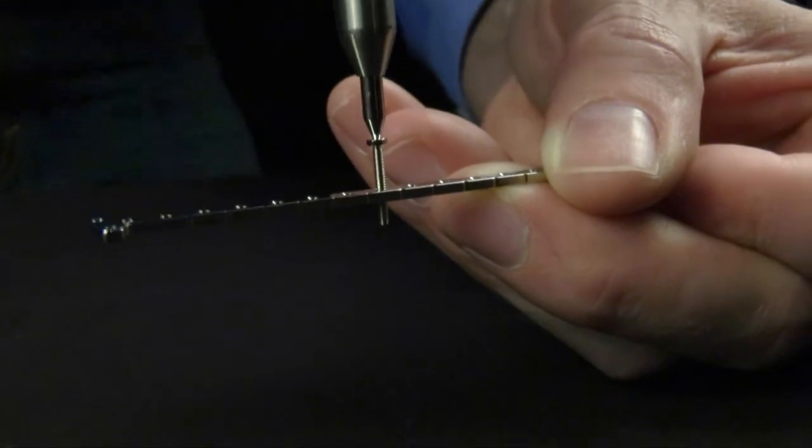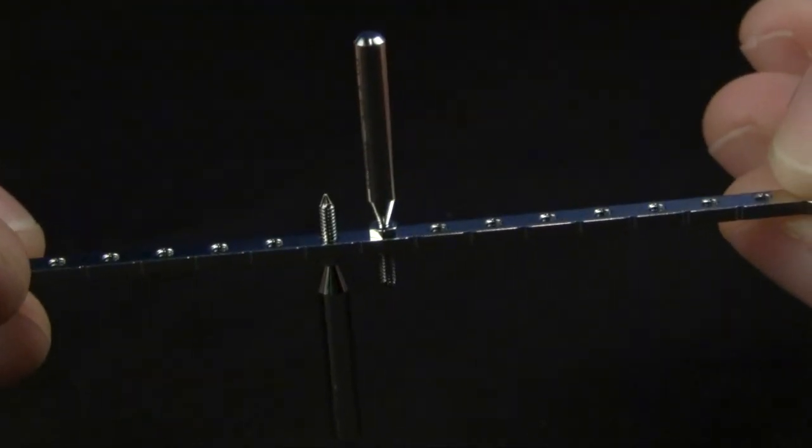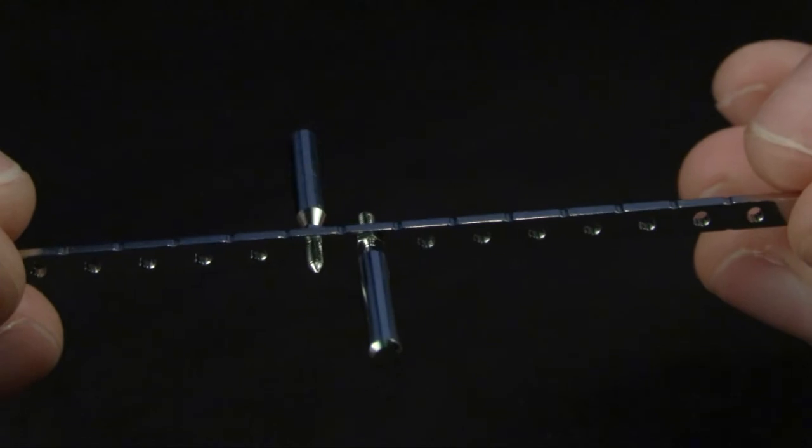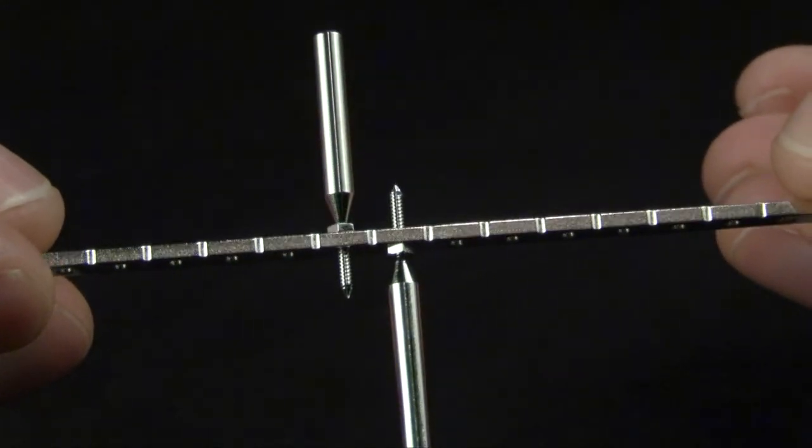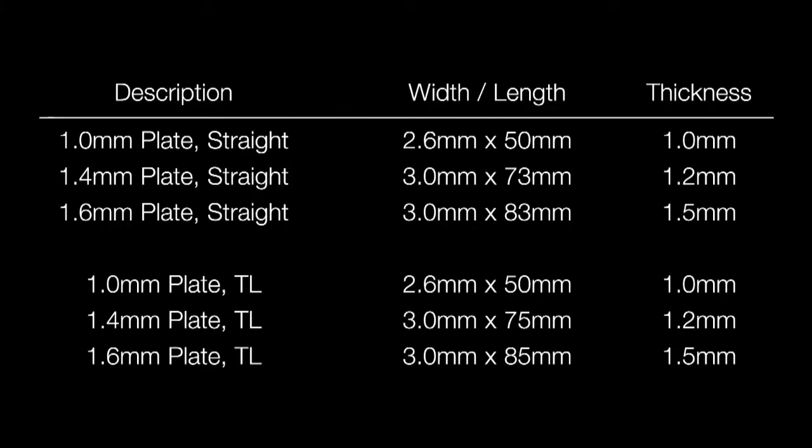This also results in symmetric plates, obviating the need for right and left hand variants of shaped plates. The threaded plate allows screws to be inserted from either surface of the plate. Width and thickness of VetKISS plates varies according to plate size as noted in this chart.